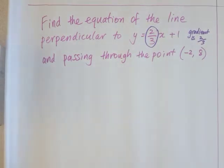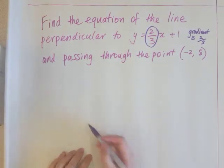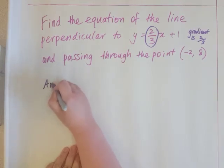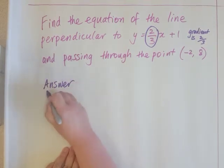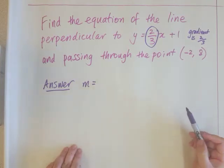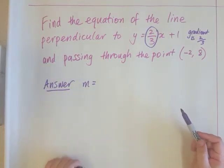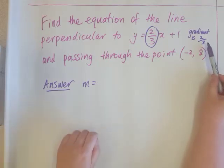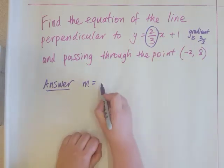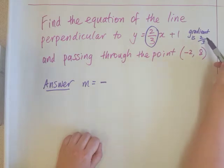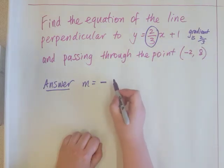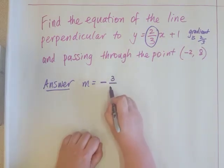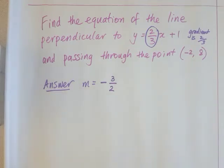So the answer that you're trying to find is the perpendicular line. Your gradient is therefore going to be the negative reciprocal of this gradient here. This means you use the opposite sign and you turn the fraction upside down. So this is positive, so our gradient will be negative. This is two over three, so our gradient will be three over two. The negative reciprocal.